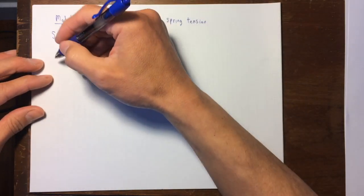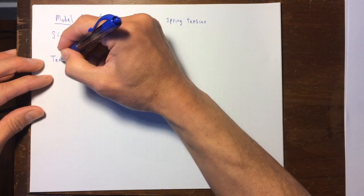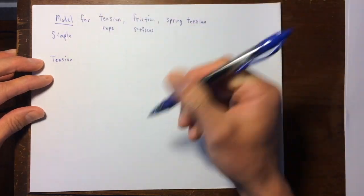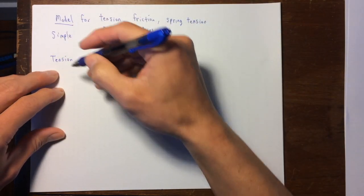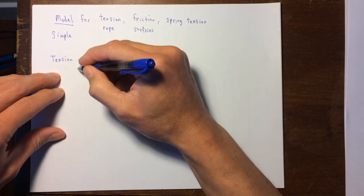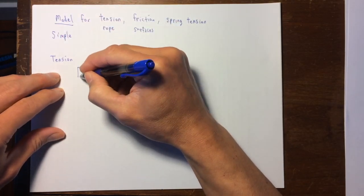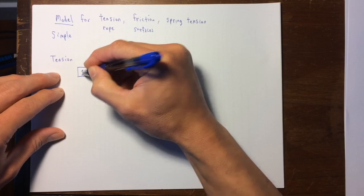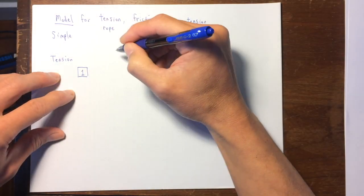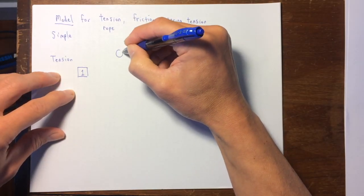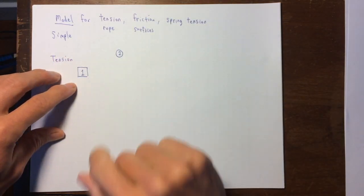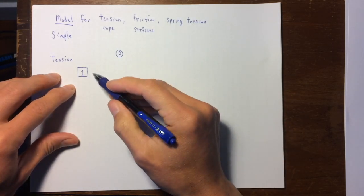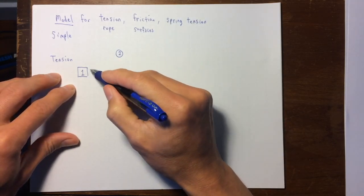Okay, so let's explore tension first. So here's an example. I'm going to draw a picture of two different objects. Here is a square shaped object I'll call object number one. And here is a round object called object number two. And it doesn't matter what their shapes are, but they're just different shapes and they are connected by a string.